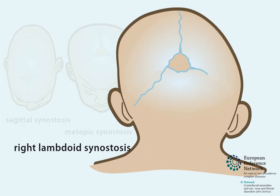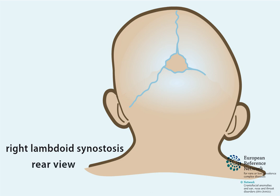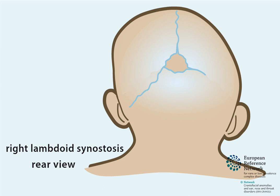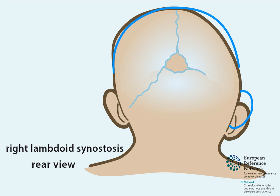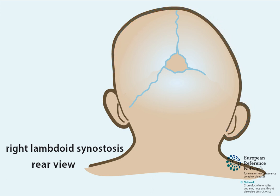Right lambdoid synostosis. In rarer conditions, one of the lambdoid sutures is prematurely closed. In lambdoid synostosis, growth of the skull base is also affected, indicated by the ear on that side being located at a lower position, best seen from behind. Moreover, backward growth of the occiput is inhibited on that side, which is accompanied by contralateral occipital bossing.